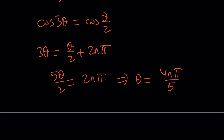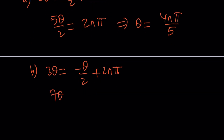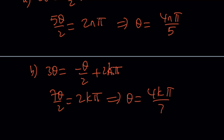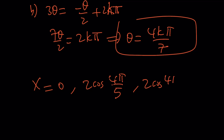For the second branch, cosine(3theta) = cosine(theta over 2) also gives 3theta equals negative theta over 2 plus 2k pi, leading to 7theta over 2 equals 2k pi, so theta equals 4k pi over 7. With k equals 0 we get 0 again — no need to duplicate. For k equals 1, theta equals 4pi over 7. Since x equals 2 cosine theta, the x values are: 0, 2 cosine(4pi over 5), and 2 cosine(4pi over 7). Those are the solutions of this equation.